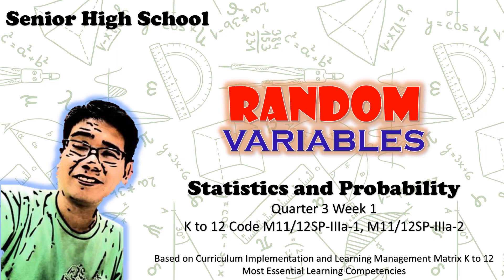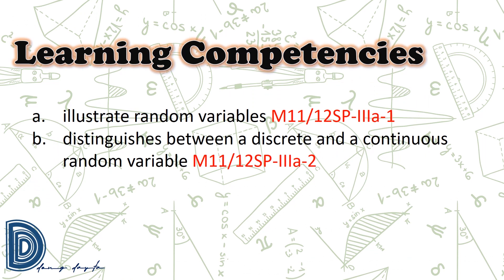Welcome to senior high school math series. Let us have random variables under statistics and probability, quarter 3, week 1. Based on the curriculum implementation and learning management matrix for K-12's most essential learning competencies, here are our learning competencies: illustrate random variables and distinguish between a discrete and a continuous random variable.